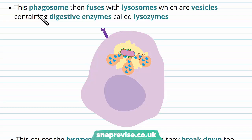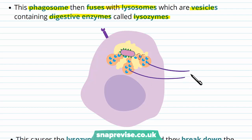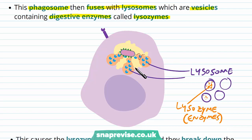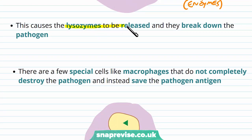Now we need to begin destroying the pathogen. The phagosome fuses with lysosomes, which are contained waiting in the cytoplasm of the phagocyte. A lysosome is a vesicle which contains digestive enzymes called lysozymes — so the lysosome is the membrane-bound vesicle, and inside are the digestive enzymes called lysozyme. When the lysosomes fuse with the phagosome, the lysozymes get released onto the pathogen and start breaking it down, breaking down the pathogen's structure.